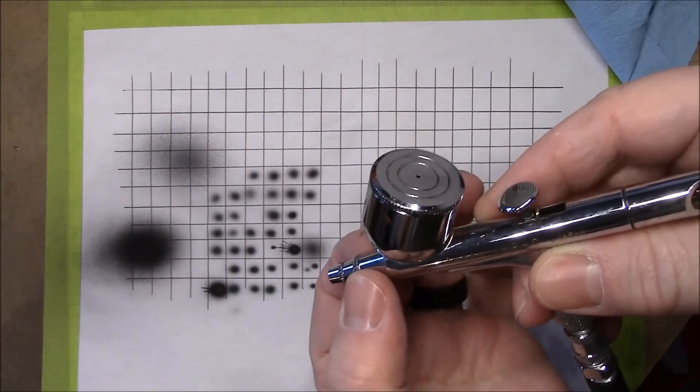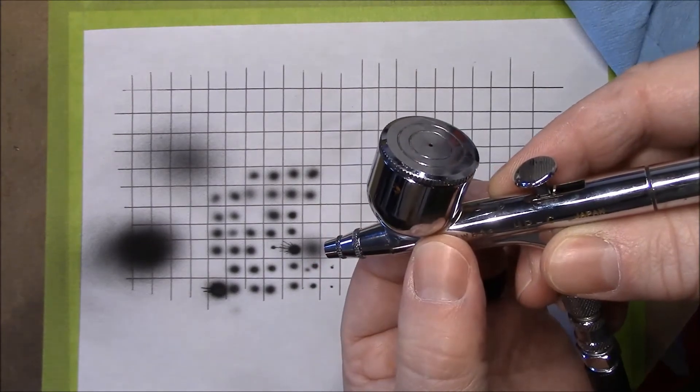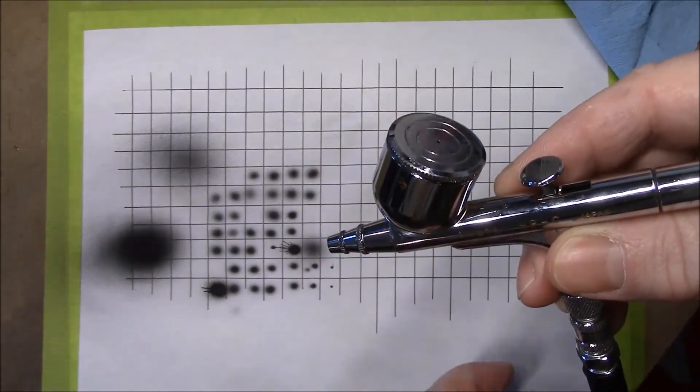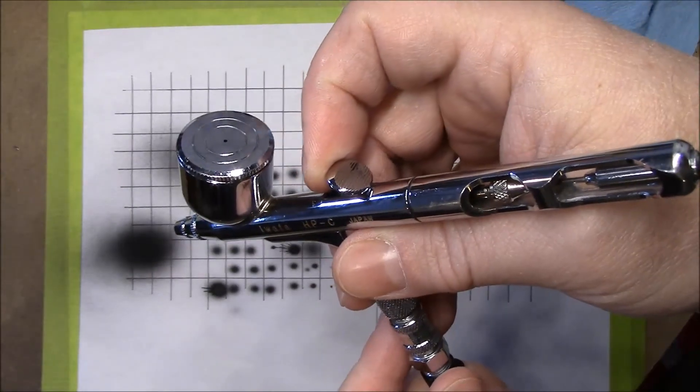It's the distance and the amount of paint you're putting out creates the dot, not the needle. The needle's just what the paint rolls down. And if you have a bigger cavity because your needle has a larger diameter and you pull the needle all the way back, then you're allowing more paint into that area where it does the atomization. It only affects full needle back. That's it.